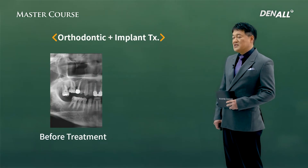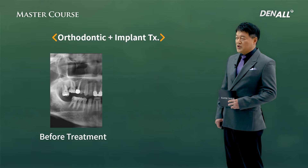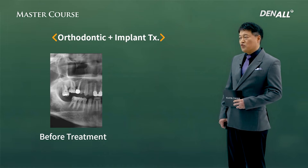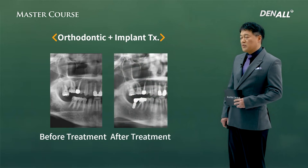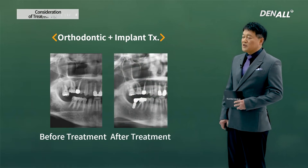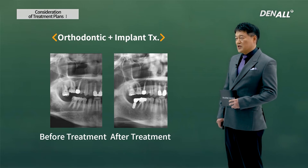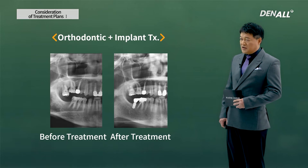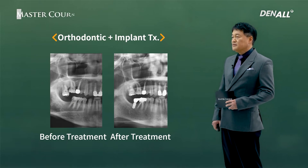In tooth number 47, you can see it's missing. If implant surgery is necessary, number 17 is severely extruded. In this case, implant surgery cannot be done immediately — first, with orthodontic treatment, the extruded teeth need to be pushed back before implant treatment can proceed.